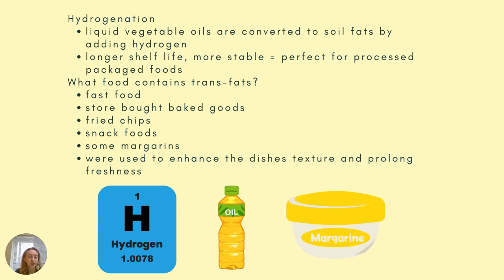Hydrogenation is when they take liquid vegetable oils and convert them to solid fats by adding hydrogen to them. The reason they do this is because it causes a longer shelf life and makes it more stable, so it's perfect for processed and packaged foods. What contains trans fats? Fast foods, store-bought baked goods, fried chips, snack foods, some margarines — basically any type of processed food and all fast foods contain trans fats.